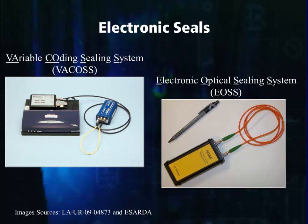There are two types of electronic seals used by the IAEA. The first is the Variable Coating Sealing System, commonly referred to as VACOS. The VACOS seal consists of a seal body containing the electronic circuitry and battery, a fiber optic cable, and an interface box to provide communication between the seal and the reader. The VACOS seal employs an active fiber optic light source sending light pulses through the fiber optic cable and monitoring the retrieved signal. The seal is reusable and is mainly used for applications where multiple openings and closings are expected, or when the seal is combined with a remote monitoring system.